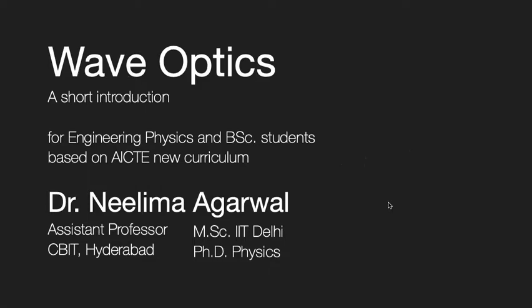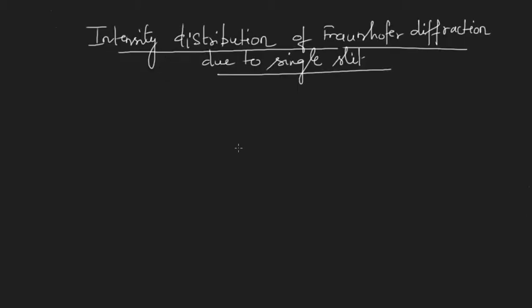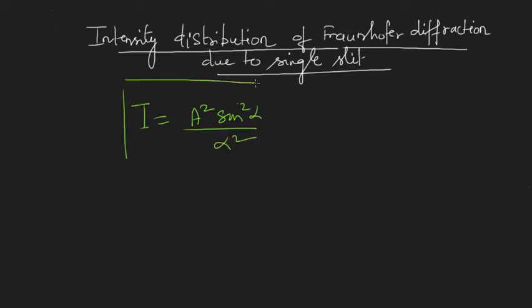Let us continue with our lecture on Fraunhofer diffraction due to a single slit. In the last lecture, we divided the slit into n parts and found the resultant intensity due to those n waves. We obtained the intensity distribution by superposition of those waves and got the formula: I = a² sin²α / α².